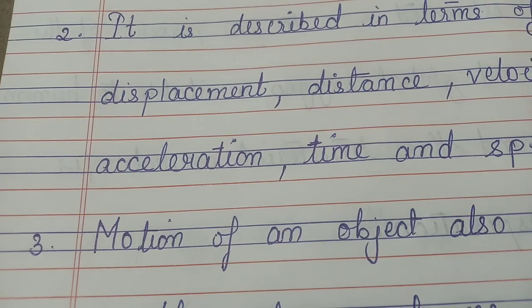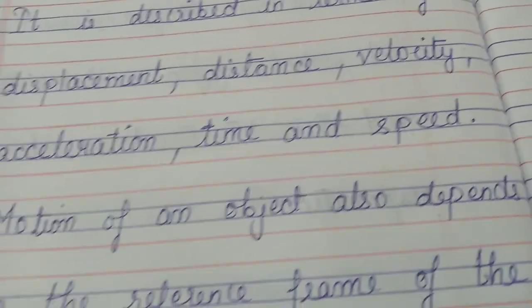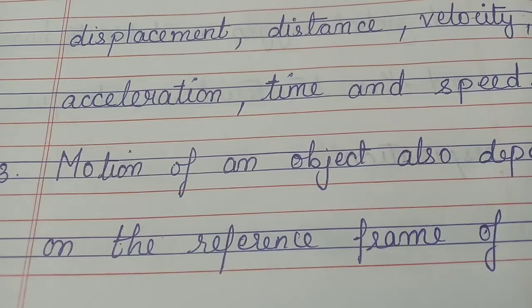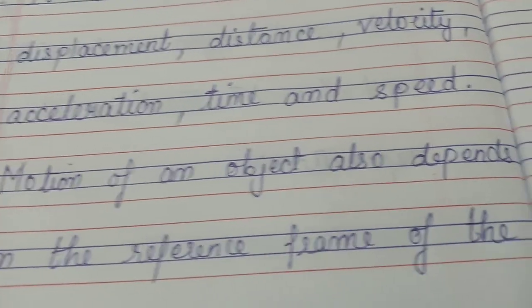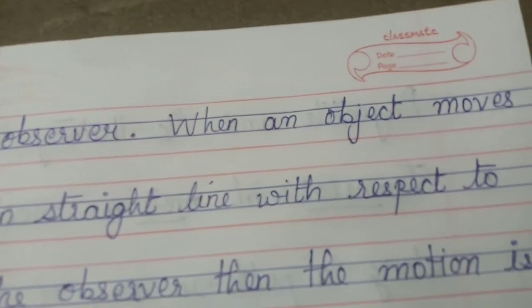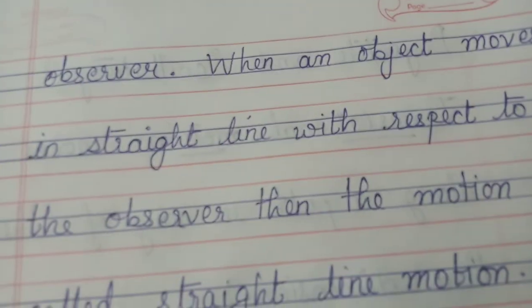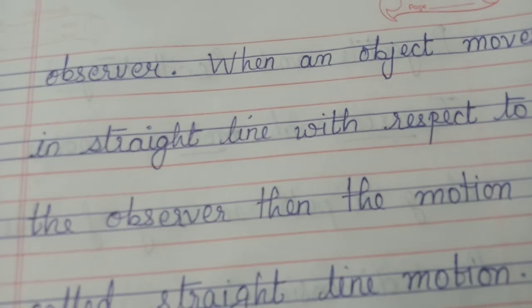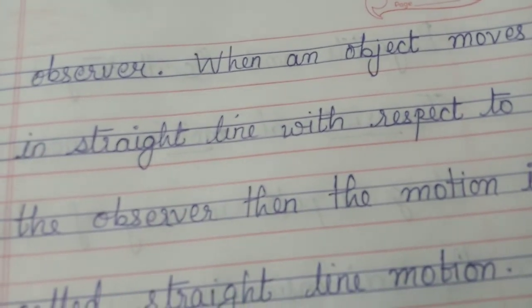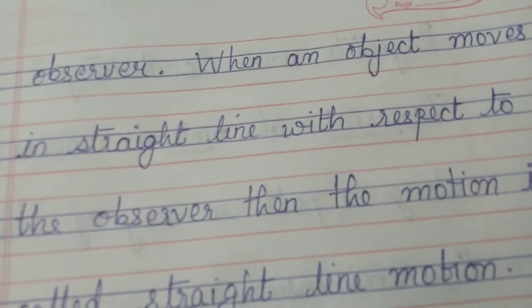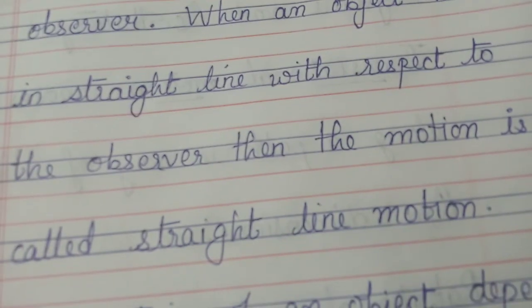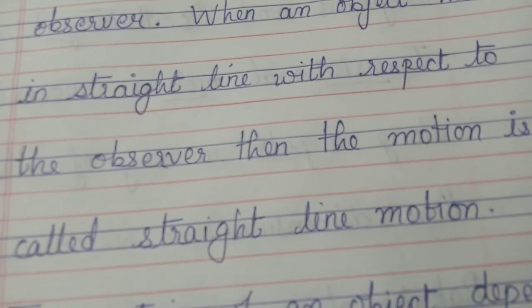Motion of an object also depends on the reference frame of the observer. When an object moves in a straight line with respect to the observer, then the motion is called straight line motion.